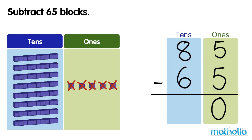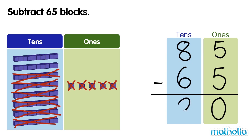Next, subtract the tens. 8 tens minus 6 tens equals 2 tens. There are 20 blocks left. 85 minus 65 equals 20.